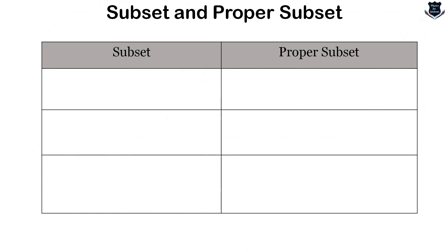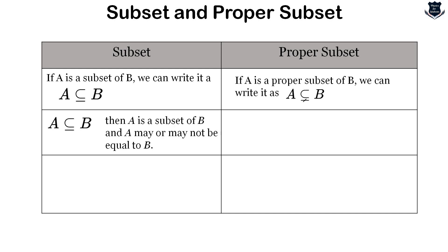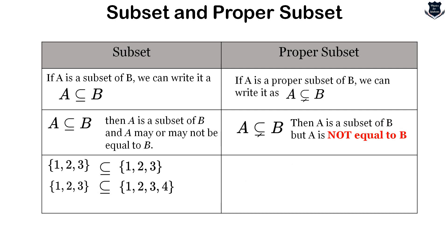In tabular form, let's look comparatively at the differences between subset and proper subset. If A is a subset of B, we write it this way; if A is a proper subset of B, we write it that way. The first sign denotes A is a subset of B and may or may not be equal to B. The second shows it's a subset but won't be equal to B. For example, {1,2,3} is a subset of {1,2,3} and also of {1,2,3,4}. However, {1,2,3} is not a proper subset of {1,2,3}, but is a proper subset of {1,2,3,4}.